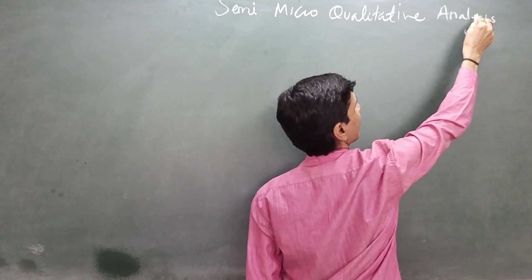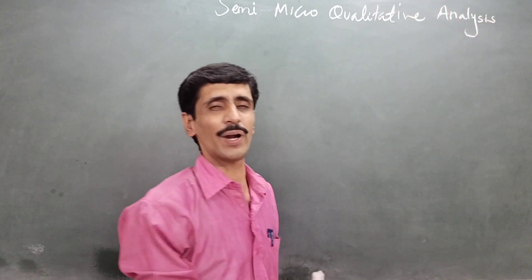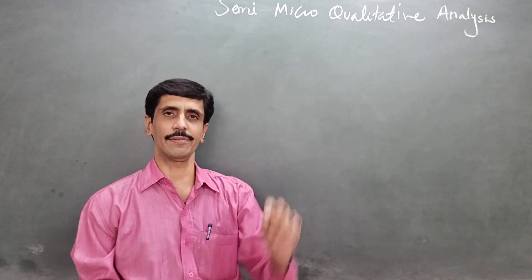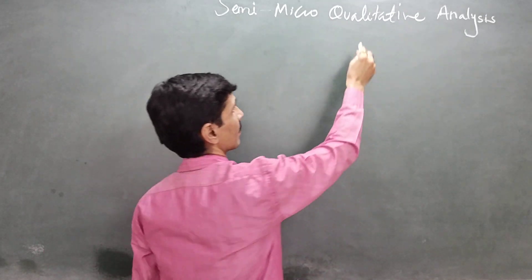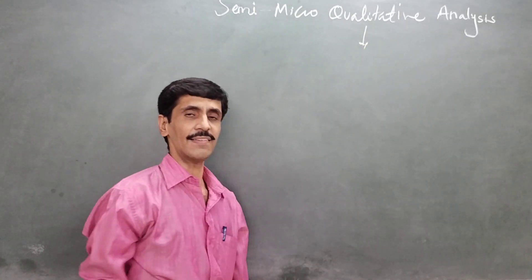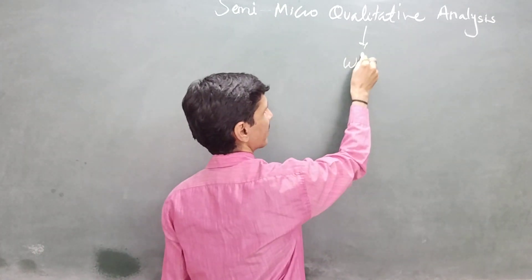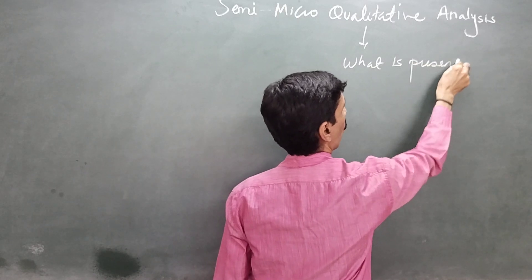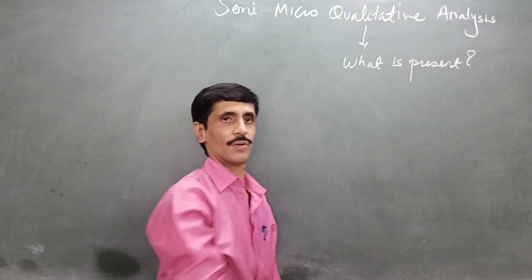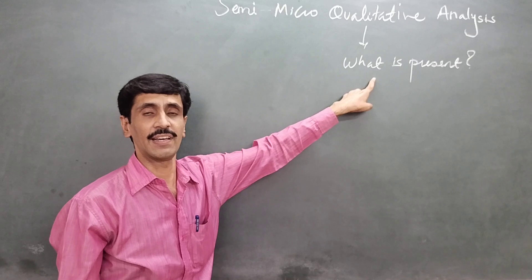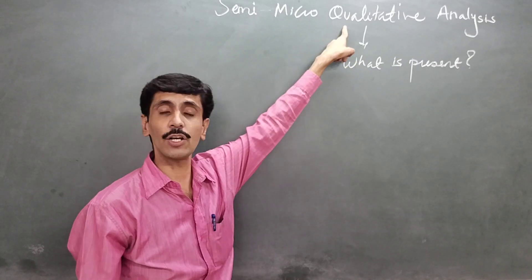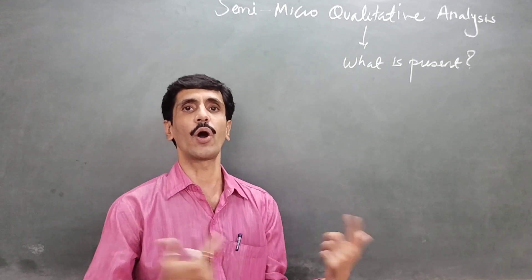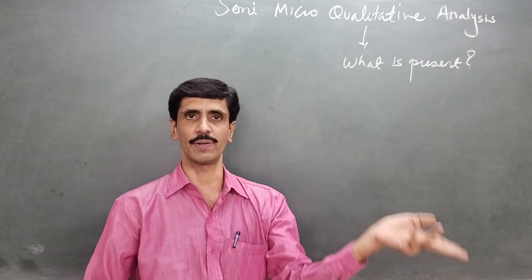Let us first try to understand the meaning of this — what exactly is it all about? The word 'qualitative' answers the question: what is present, or what is the composition? The question 'how much is present?' is answered by the word 'quantitative.' I hope you understand the difference between the two.